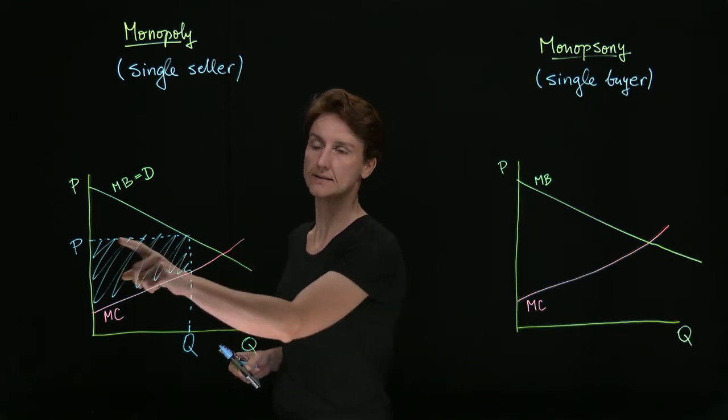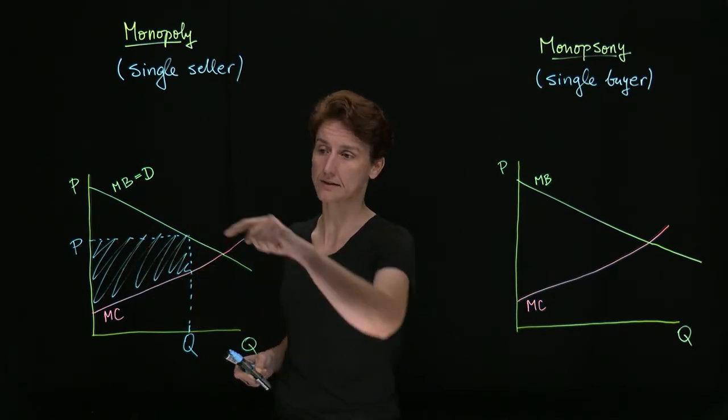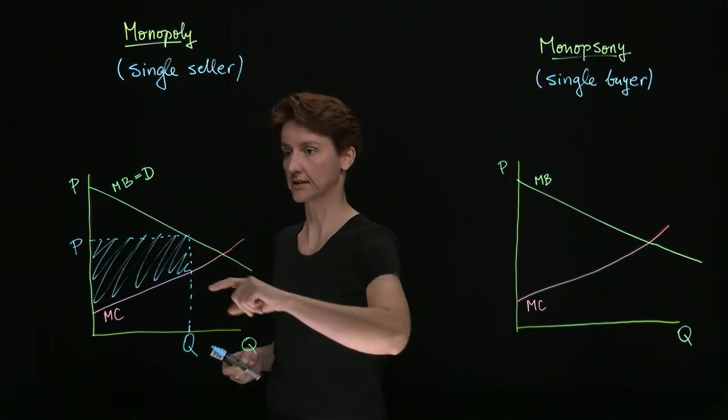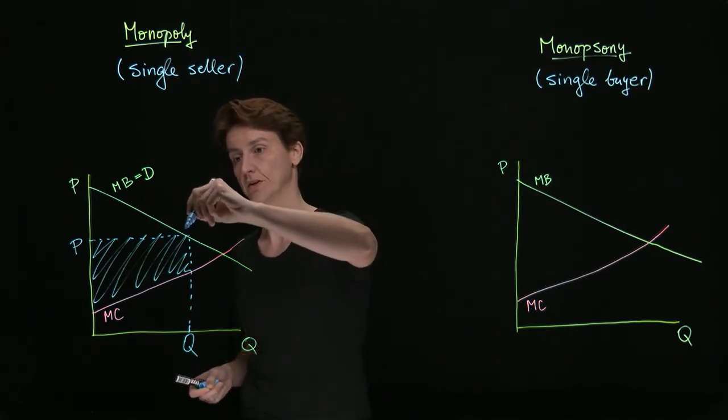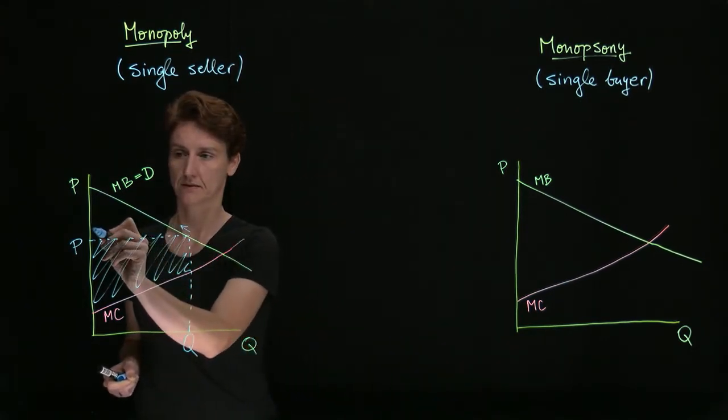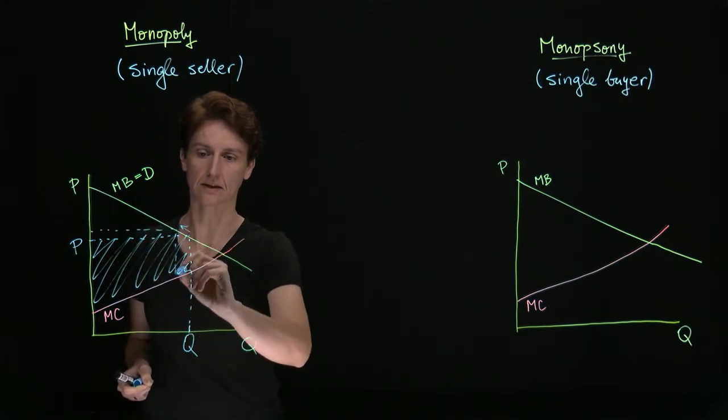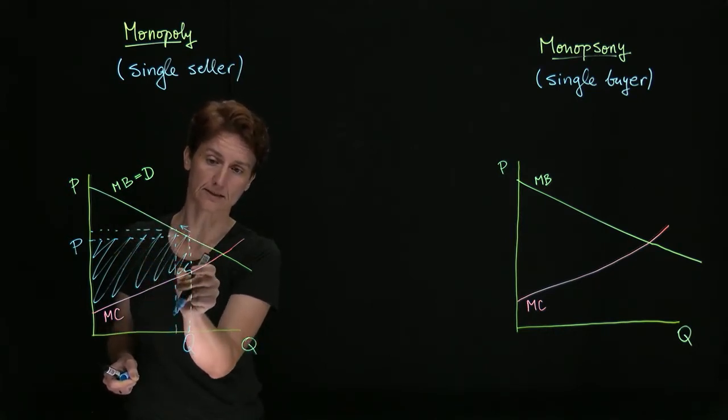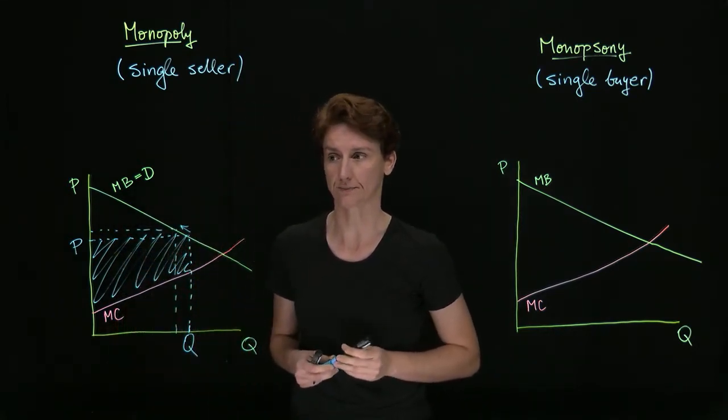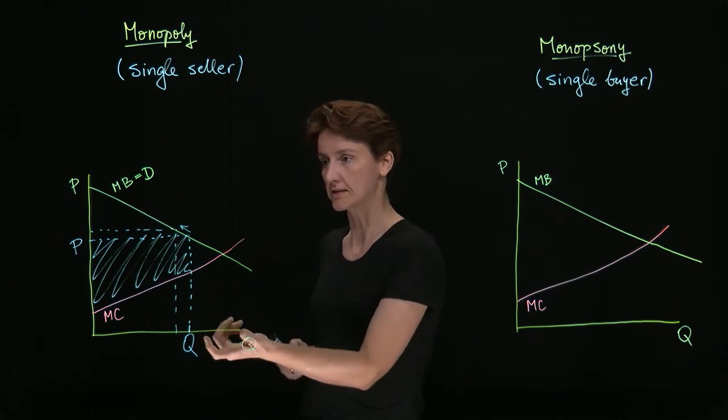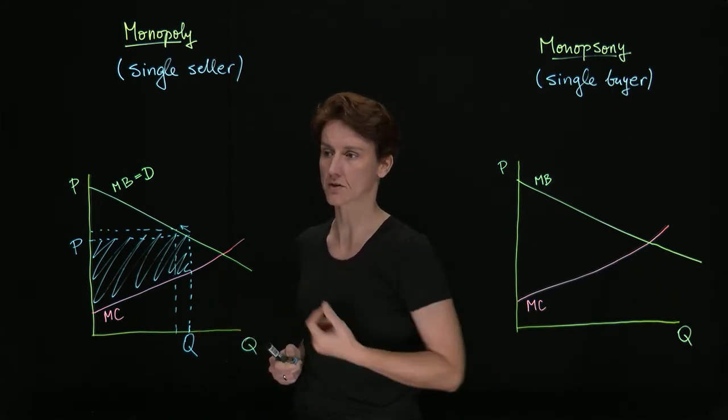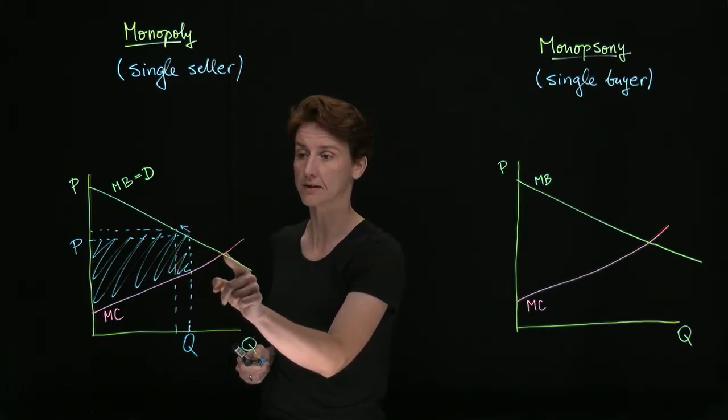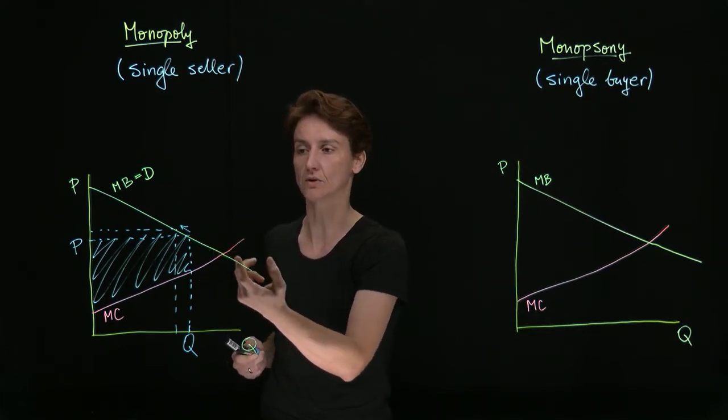In that case, notice that this area is larger than if price had been at the competitive equilibrium. As a matter of fact, this seller might want to increase price even further because the area they gain by being able to charge more might still exceed the area they lose by selling fewer units. So a seller that doesn't face competition from other firms will not continue to drop price until the competitive level because they don't have to. There's no one there to underbid them.